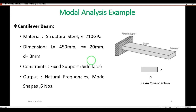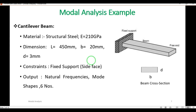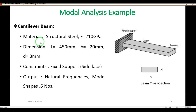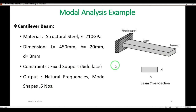The example uses a cantilever beam with a rectangular cross section. The length of the beam is 450 mm, breadth is 20 mm, and depth is 3 mm. The material used is structural steel with Young's modulus of 210 GPa. The constraint is a fixed support on one side face. The output required is natural frequency and mode shapes — six modes. This example was taken from an internet source and is also solved using mathematical equations, which will be compared to ANSYS Workbench results at the end.